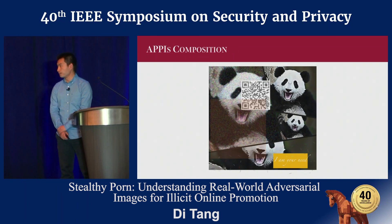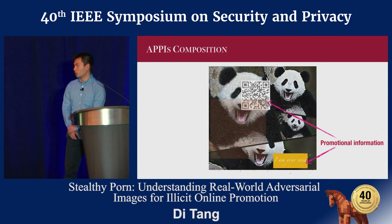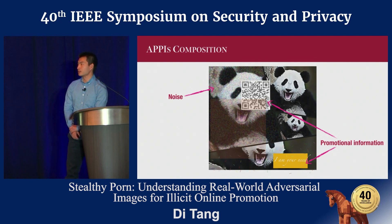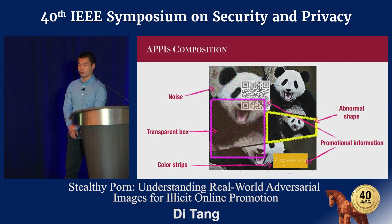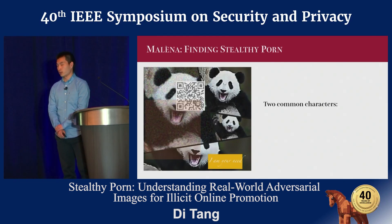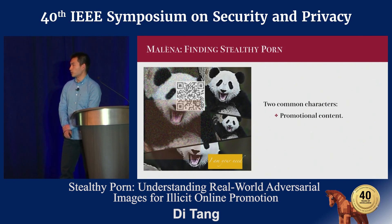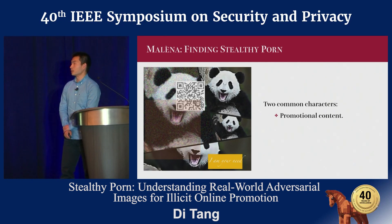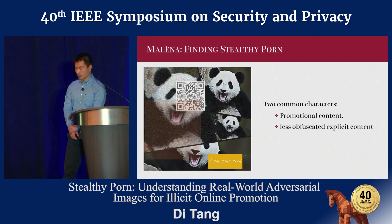Specifically, EPIs have promotional information. They may have noise, may be overlaid by strips or boxes, and may be transformed into other shapes. In general, we conclude two common characteristics most EPIs have. First, they have promotional content. And second, there is at least one region of explicit content that is clearly visible to the human eye.